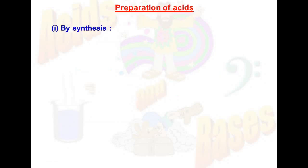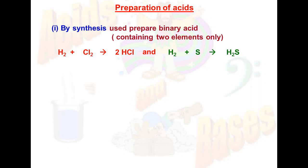Preparation of acids: first, by synthesis, in which two elements in their elementary form react to form a compound. It is used to prepare binary acids, which contain only two elements. For example, HCl is formed by the reaction of hydrogen and chlorine. Similarly, H2S is formed by the reaction of hydrogen and sulfur.